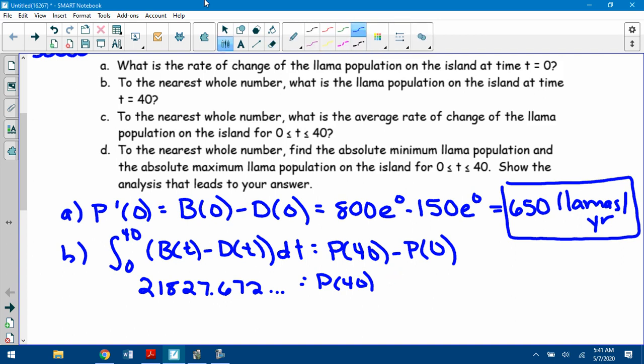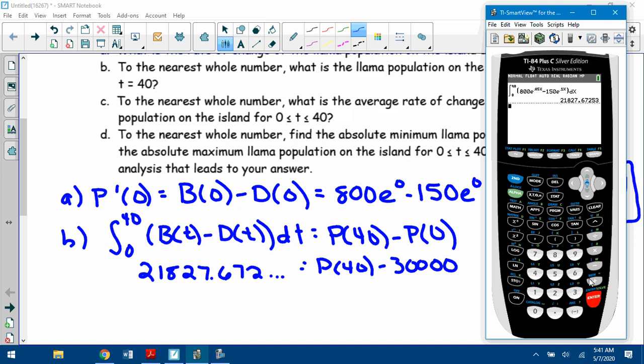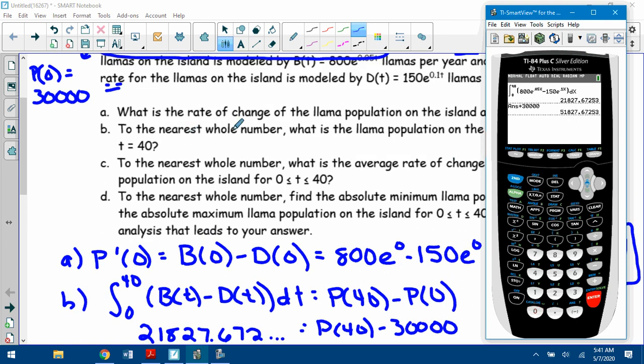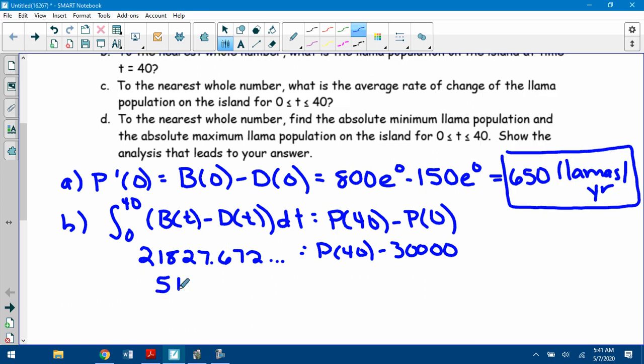So this over here is 21,827.672 equals P(40), which I want to find, minus 30,000, because we know that P(0) we set up here is 30,000. So if I just add that 30,000 over, so plus 30,000, it said 51,827.6, and it did say to the nearest whole number. So 51,828 in that point, is approximately equal to P(40). Okay, so get used to when you have a rate and you're looking for the original equation, you take the integral.